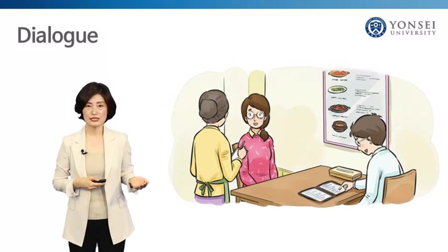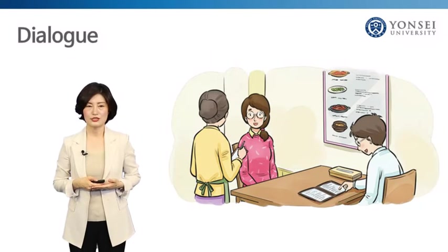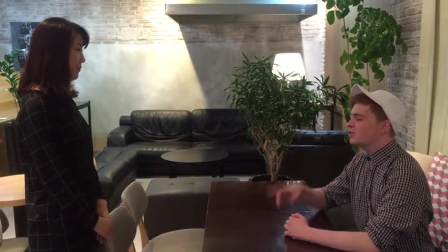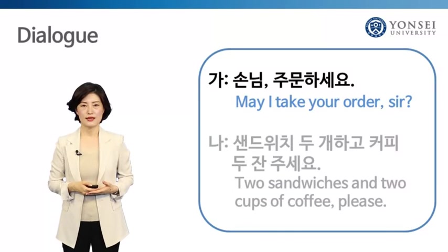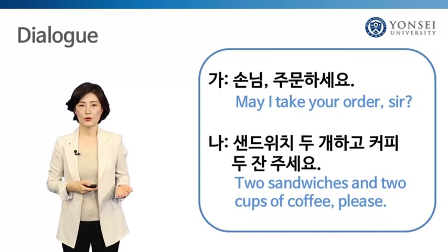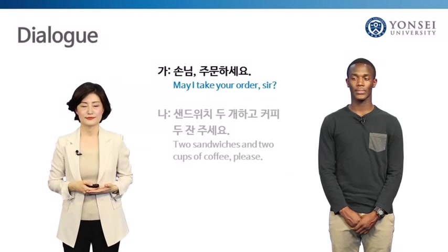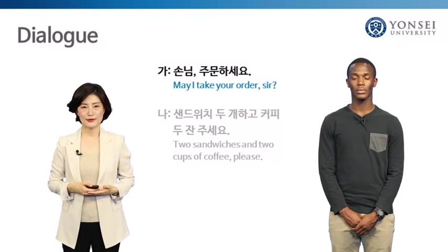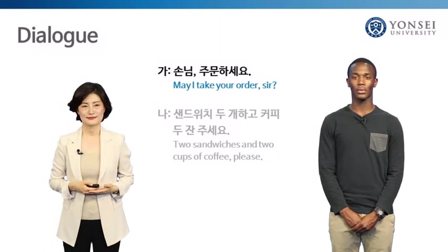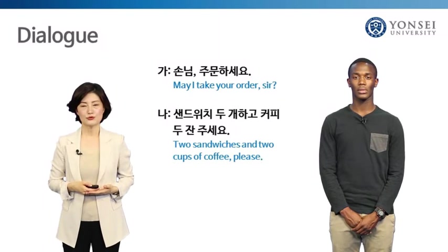Let's do some speaking practice using the expressions you have learned so far. First, take a look at the dialogue. 손님 주문하세요. 샌드위치 두 개 하고 커피 두 잔 주세요. The waitress says 손님 주문하세요, meaning 'May I take your order, sir?' And then the customer says 샌드위치 두 개 하고 커피 두 잔 주세요, meaning 'Two sandwiches and two cups of coffee, please.' Now listen and repeat after me.